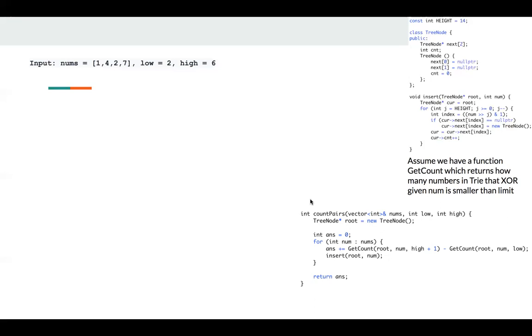Let's take an example. This is our root, and assuming height is 2, which means we have 3 levels. Let's insert some numbers first. 1 is 0,0,1. So we have this node and the count is 1.